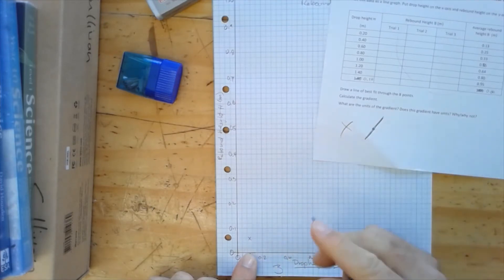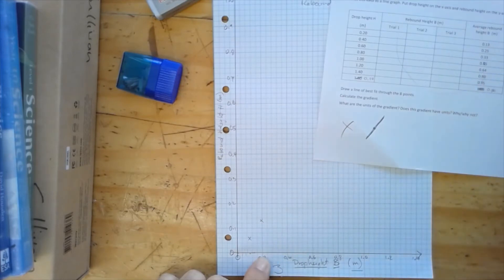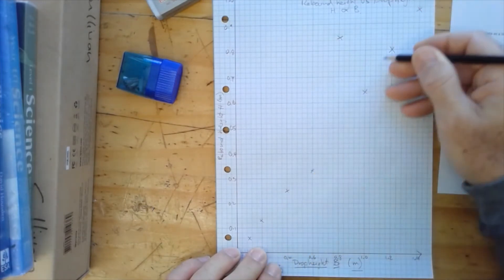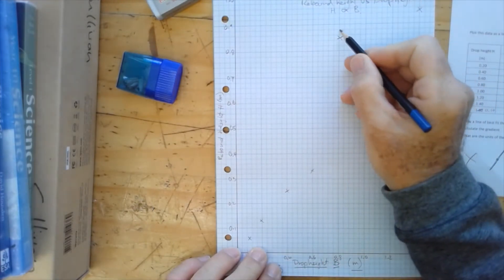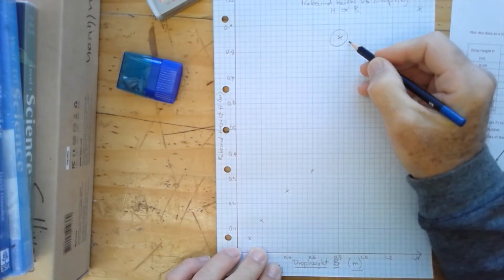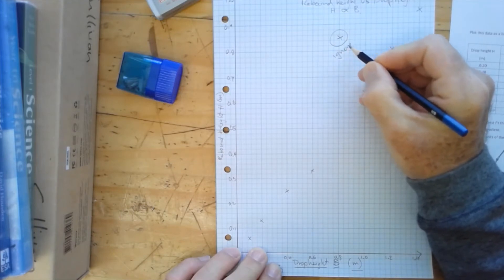We've got 0.2 and 0.13, and we'll put all of the other values in. And all of our points as little crosses, it looks like pretty much a straight line. There is this one value up here which is clearly an outlier.